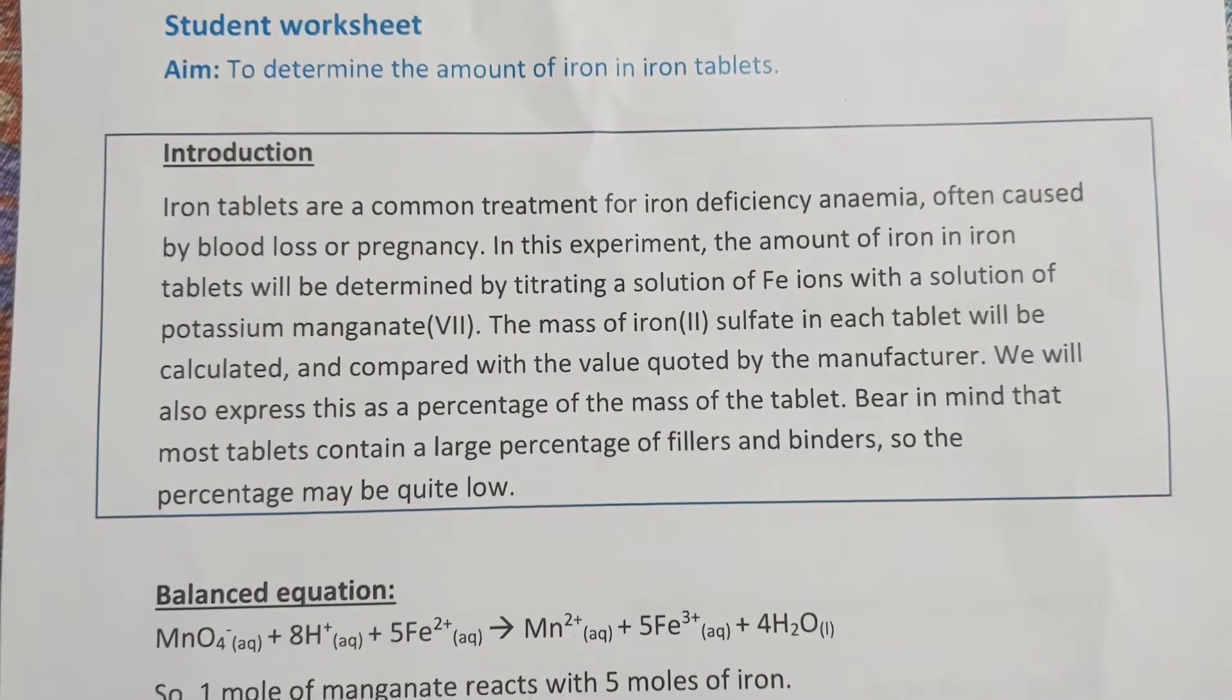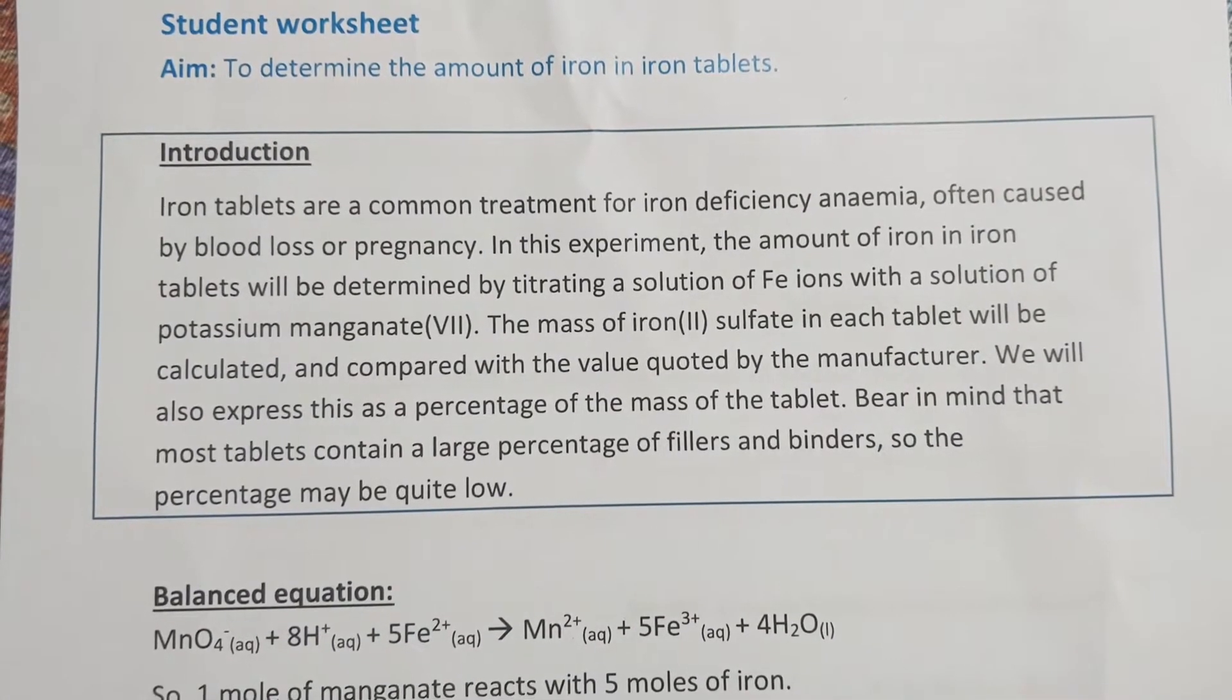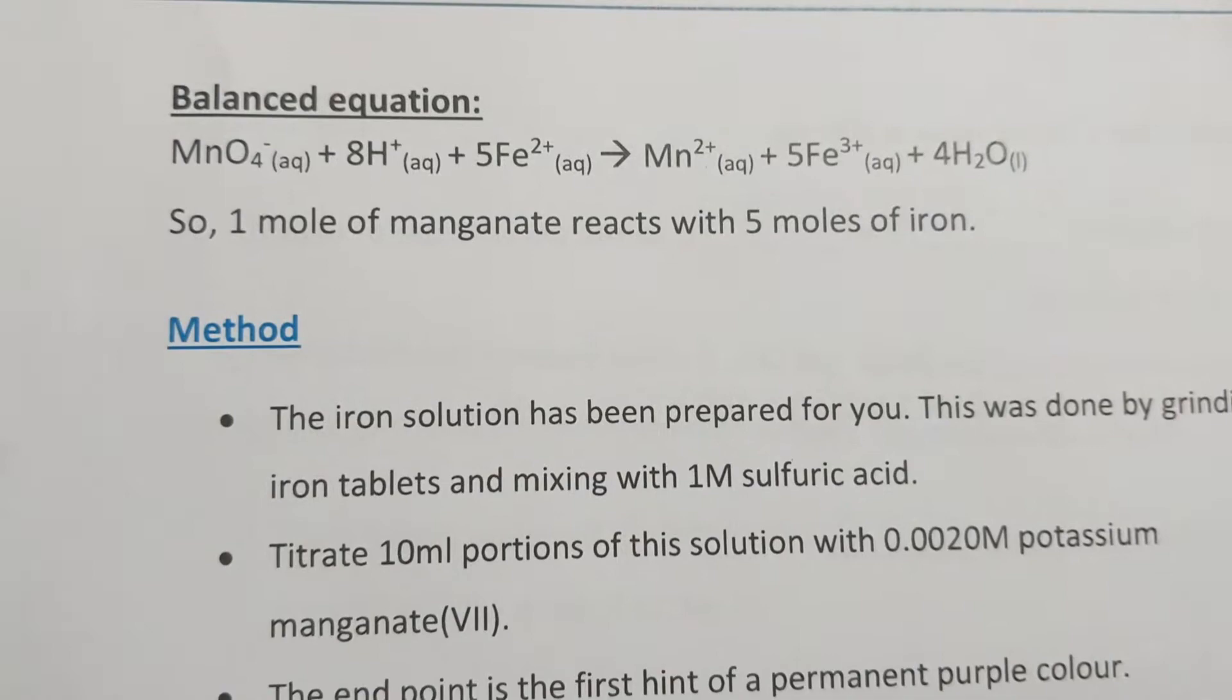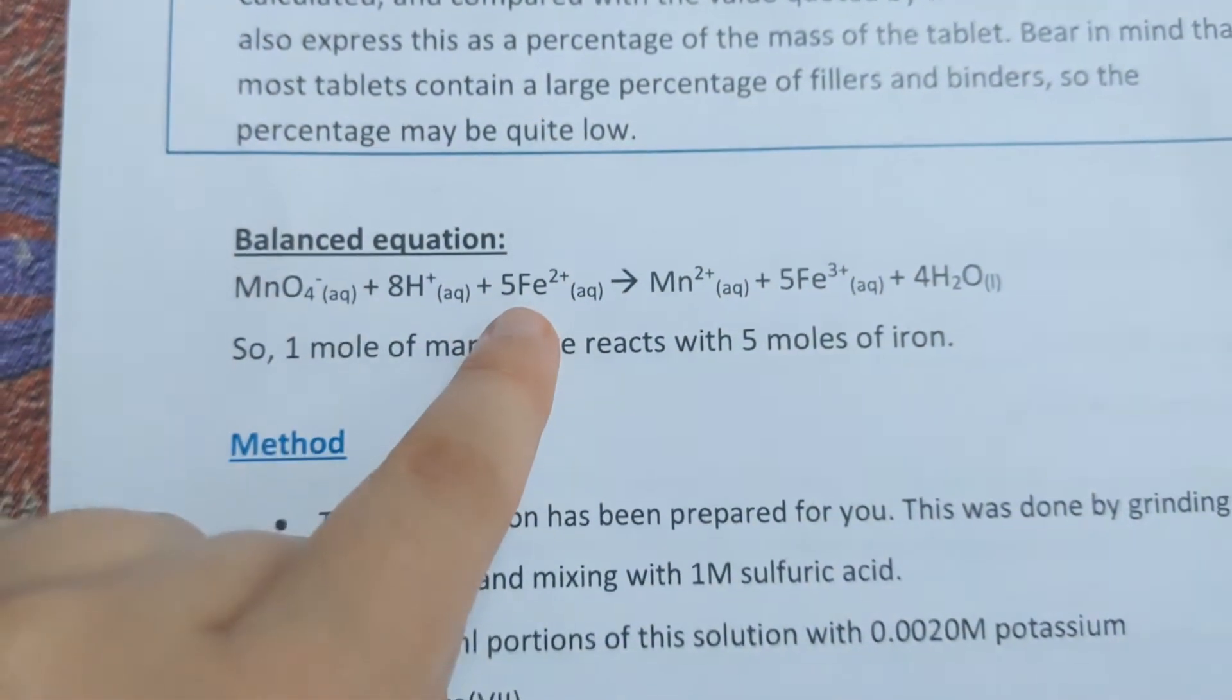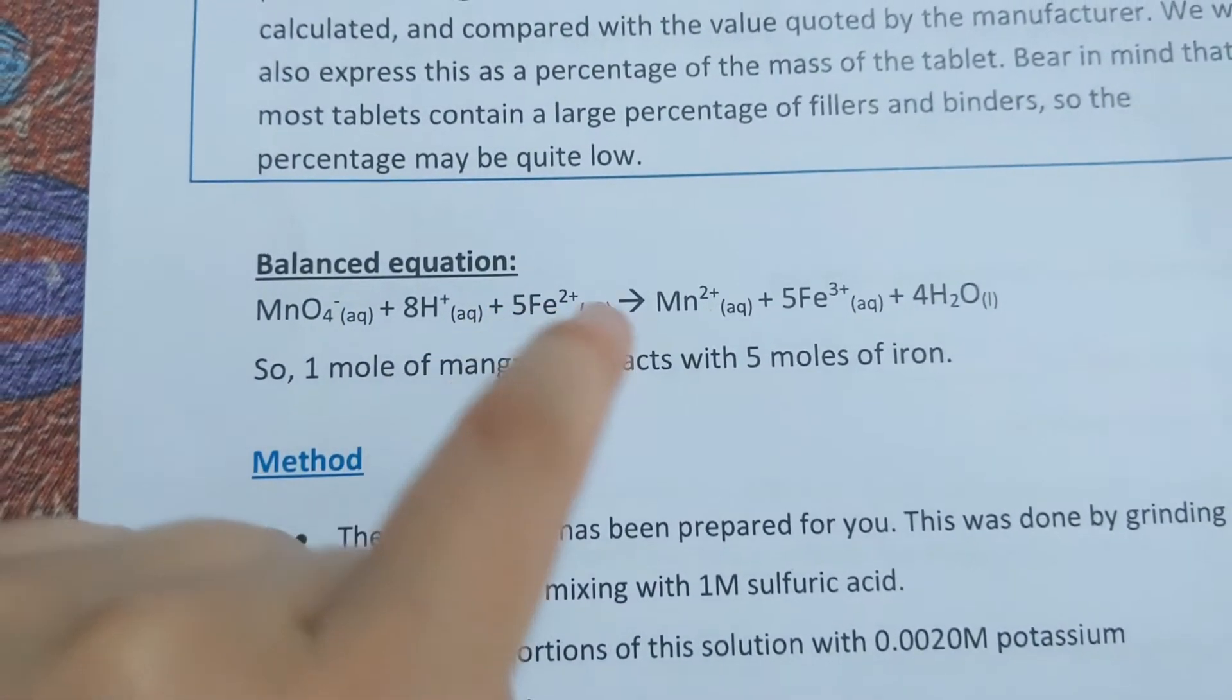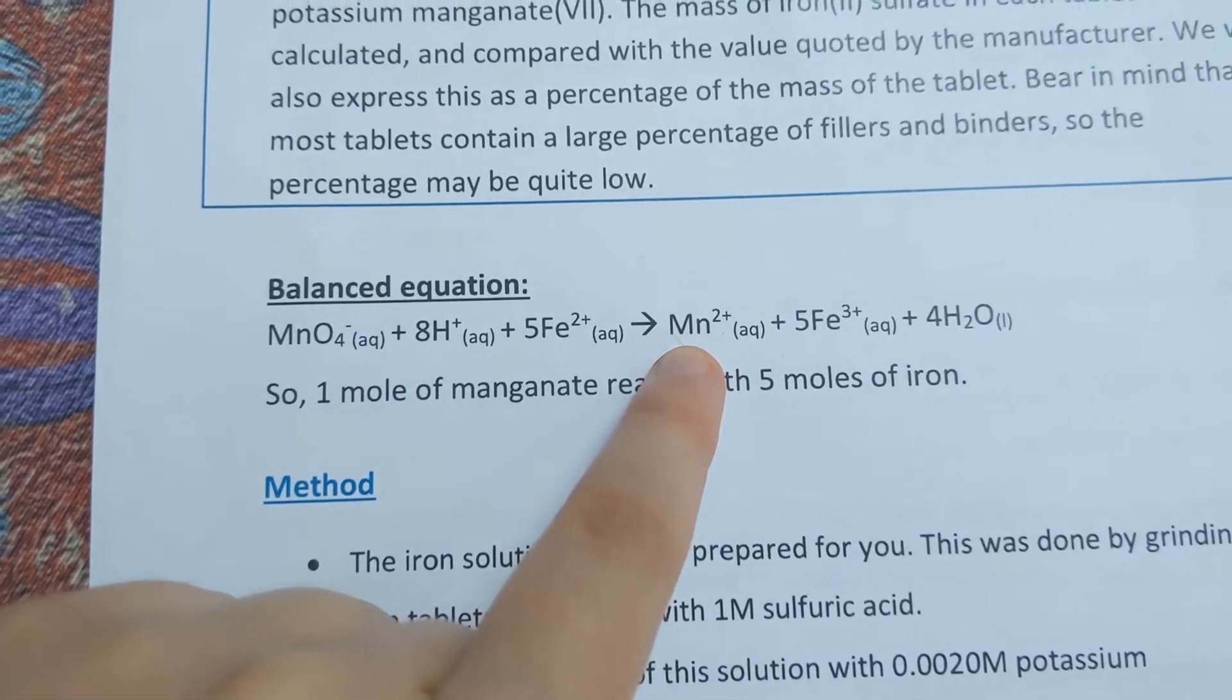The important bit here is the redox equation. We can see we've got 5 moles of iron from the iron solution for every 1 mole of manganese from the purple potassium manganate solution.